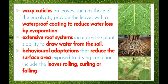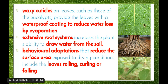Waxy cuticles, such as those on eucalypts, provide leaves with a waterproof coating to reduce water loss by evaporation. As we can see here, water sits on top of the leaf surface, showing it has a waxy coating that also prevents water from leaving the leaf.